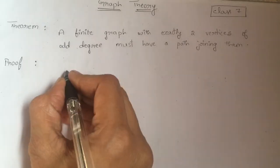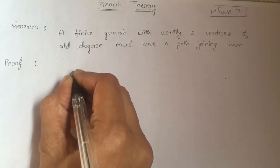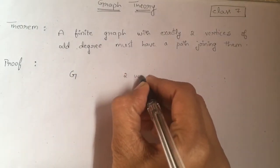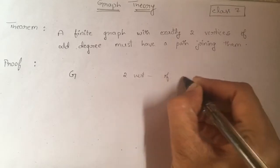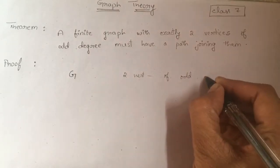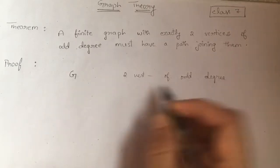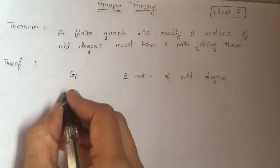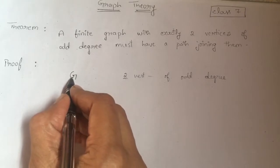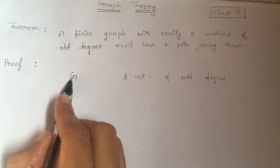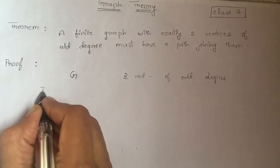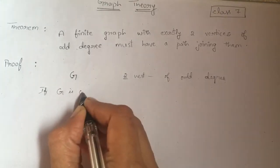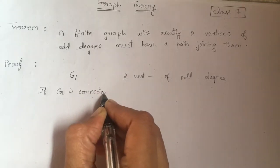This means if my graph G has exactly two vertices of odd degree, then there must be a path joining them. So let me take G as my graph. It can be connected or can be disconnected. If G is connected, then what happens?